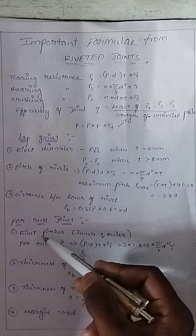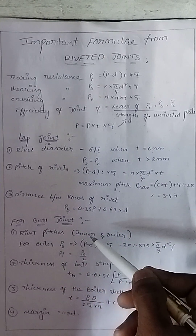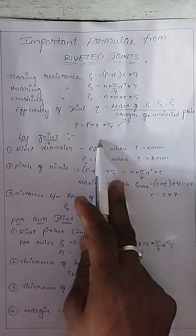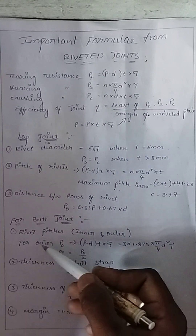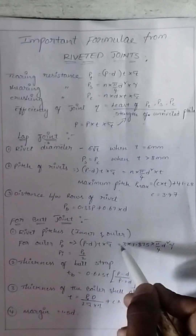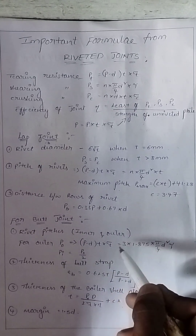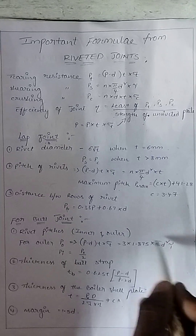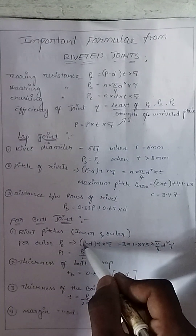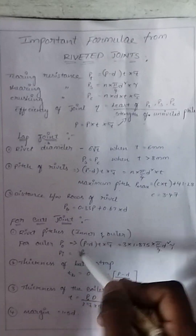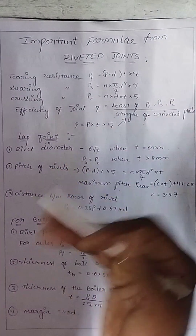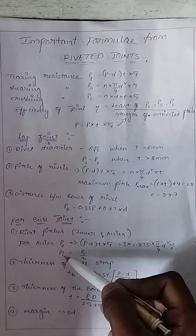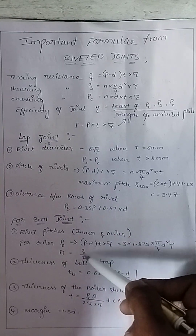Next is butt joint. Butt joint has two types of rivet pitches: inner pitch and outer pitch, whereas lap joint has only one pitch. For butt joint: (P minus D) into T into sigma T equals 3 into 1.875 into π by 4 D squared tau. Inner pitch value equals outer pitch divided by 2.